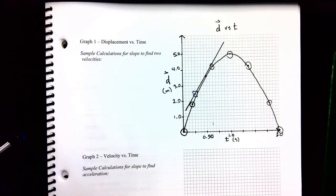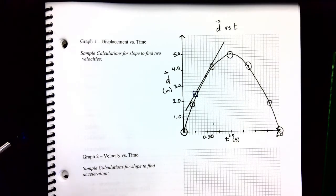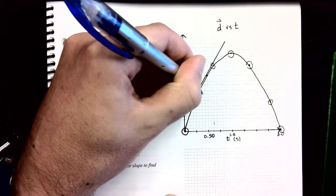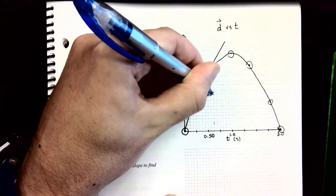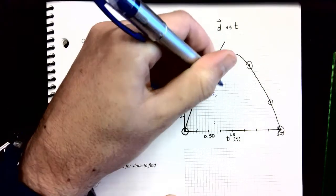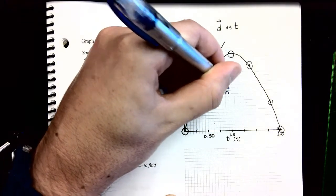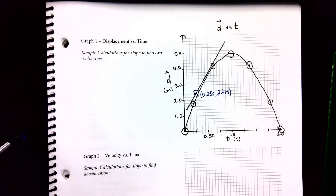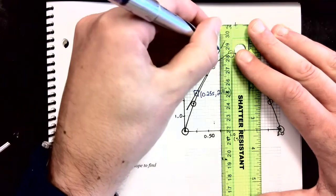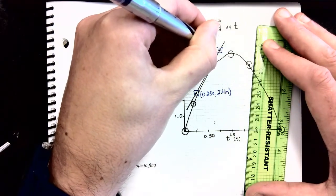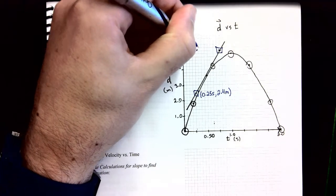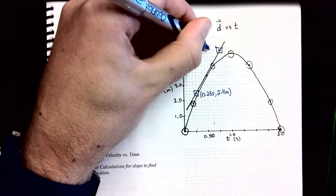Now, you don't have to pick the same points as me, because our graphs might look a little different, because we might have used slightly different increments. You might not get the exact same numbers, and that's totally fine. But I'm going to choose my first point here at 0.25 seconds. Alright, that's what the x value, or the time value is. And that's at 2.4 meters. There's my first tangent point. And I'm going to pick my second tangent point up here. Put a box around it again, a little square. And I'm going to record that as 0.75 seconds, and it's 5.2 meters.